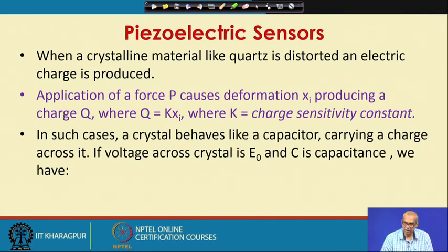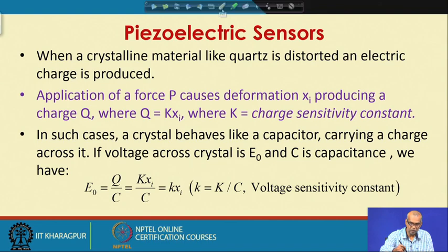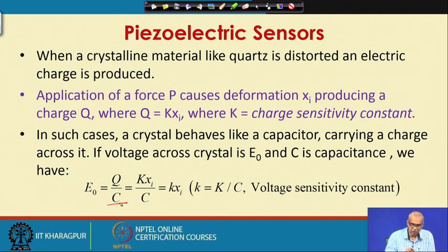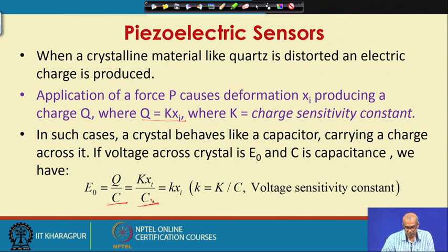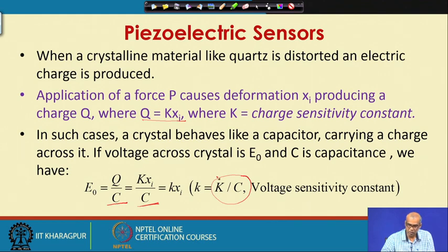Q equals K times xi, where K is known as the charge sensitivity constant. In such cases, a crystal behaves like a capacitor carrying a charge across it. If voltage across the crystal is E0 and C is capacitance, we can write E0 equals q divided by C. The voltage is charge divided by capacitance. The charge q is the charge constant times deformation, so q divided by C can be represented as K times xi divided by C.